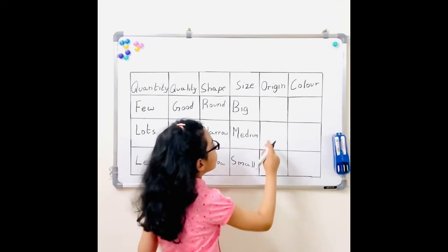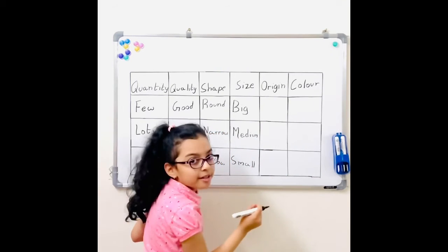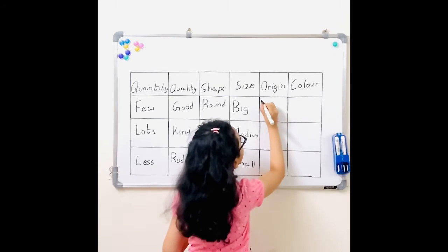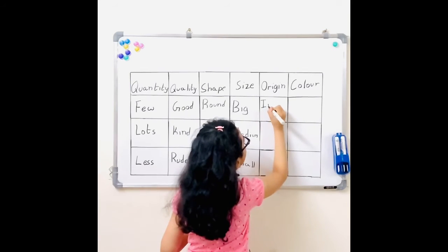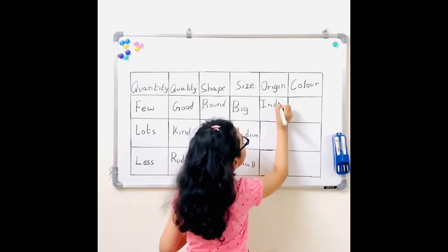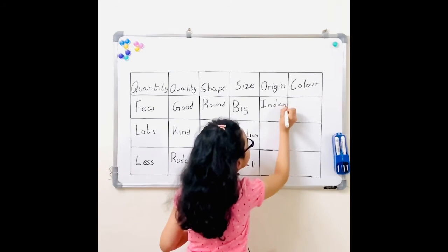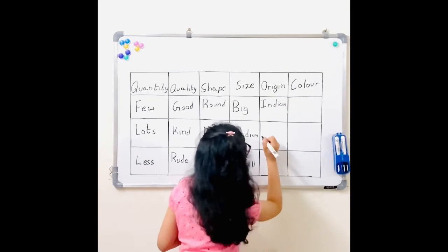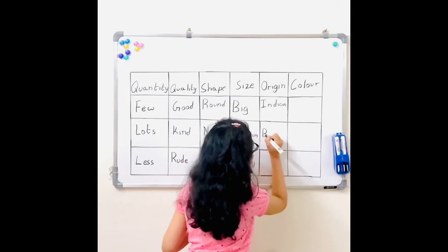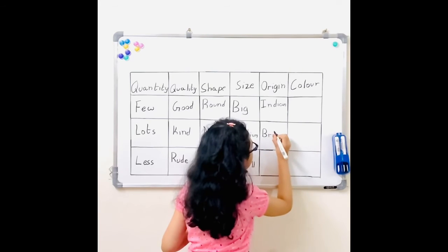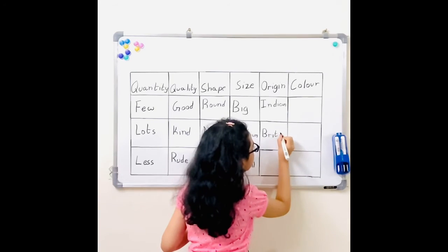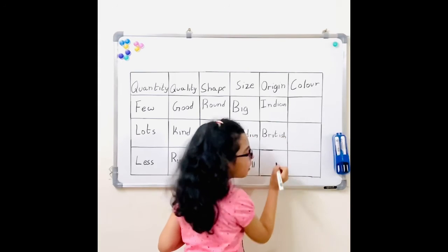Now coming to the origin. You could write Indian, British, or American.